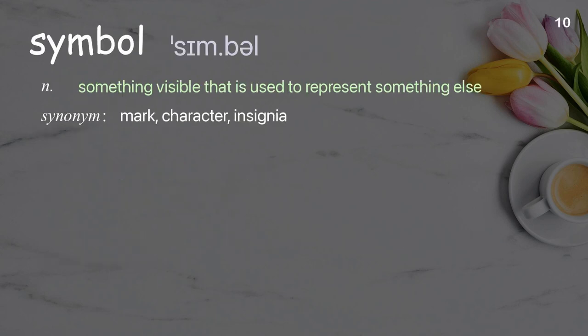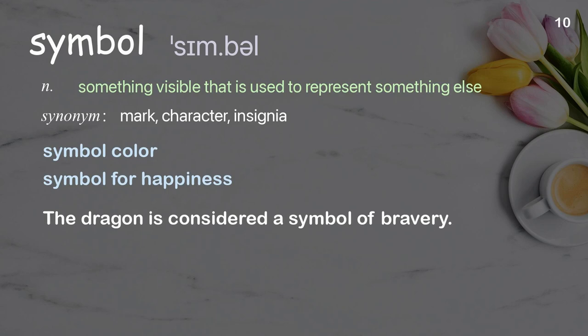Symbol: something visible that is used to represent something else. Examples: symbol color, symbol for happiness. The dragon is considered a symbol of bravery.